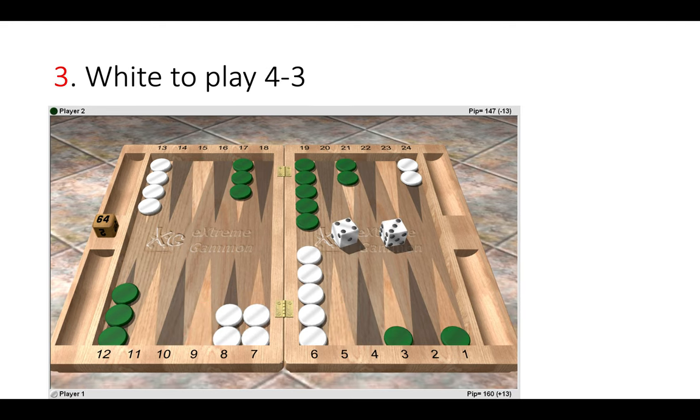Position 3. White to play a 4-3. Now here the correct move is to make the three point on green's head and put him on the bar.